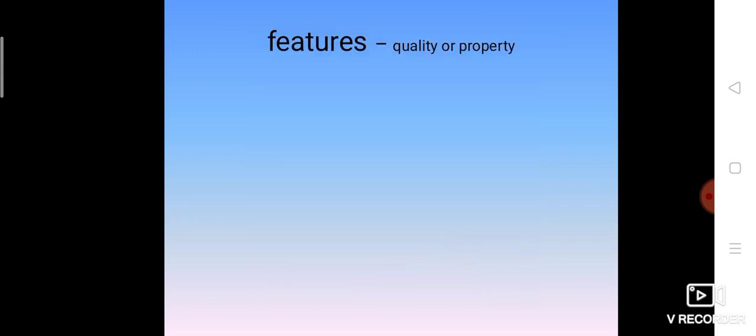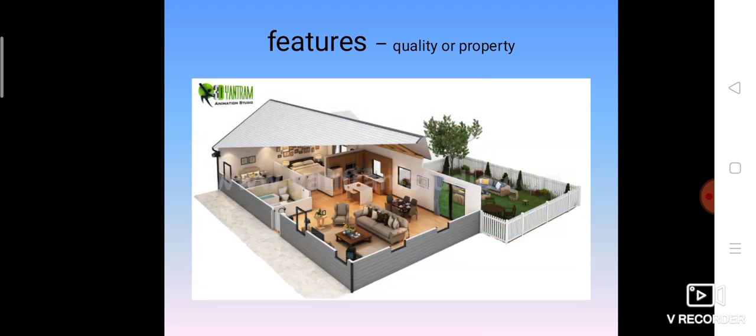The next word we are going to see is features. Features. You have to pronounce this word as features, which means quality or property. The features of a house, the features of a tree, the features of a building.